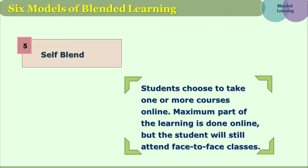The fifth type of model is the self-blend. As the name suggests, learner autonomy comes in a big way. Most of the learning happens through online mode, but the learner also attends face-to-face classes. It is the autonomy and freedom of the learner to decide what part of the syllabus to learn through online mode and what part to learn through face-to-face mode. The learner needs to be mature enough to make such decisions.